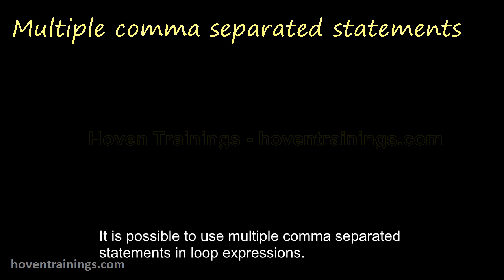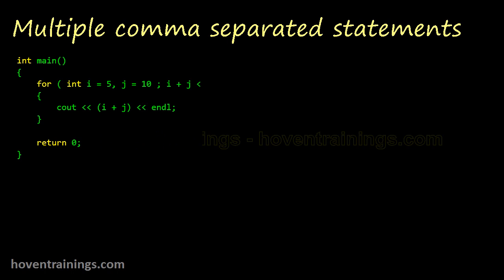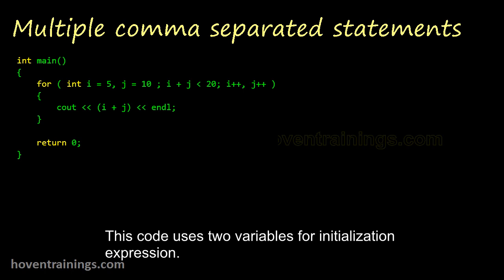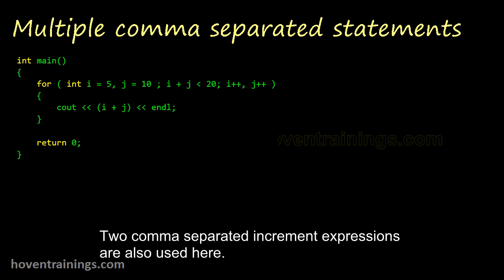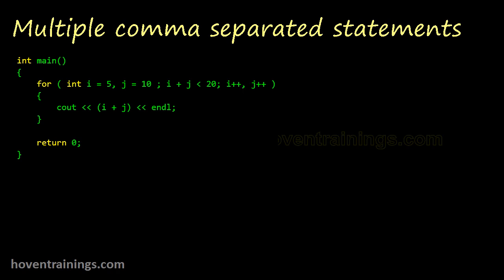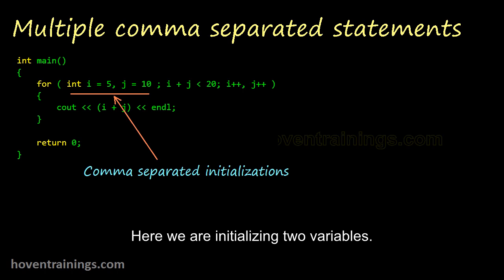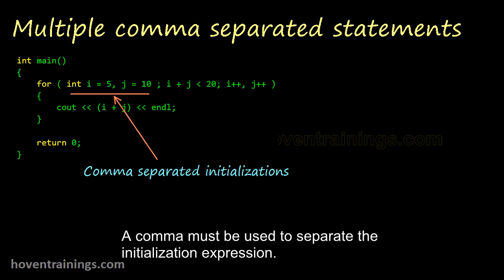It is possible to use multiple comma separated statements in loop expressions. This code uses two variables for initialization expression, and the condition expression is a combination of both i and j. Two comma separated increment expressions are also used here. Here we are initializing two variables. A comma must be used to separate the initialization expression.